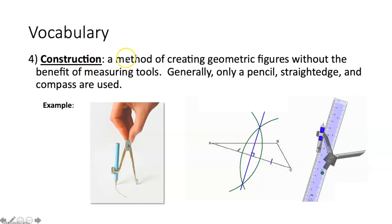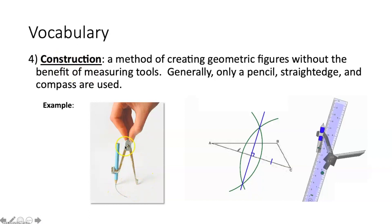A construction is a method of creating geometric figures without the benefit of a measuring tool. Generally only a pencil, a straight edge, and a compass are used. Just know that construction refers to creating geometric figures with a compass — not the north, south, east, west one, but the drawing instrument that looks something like this.